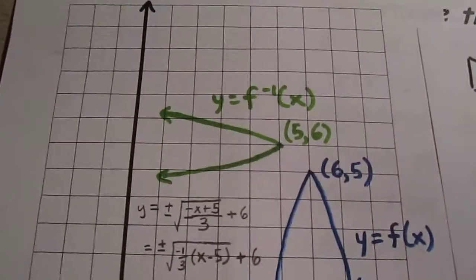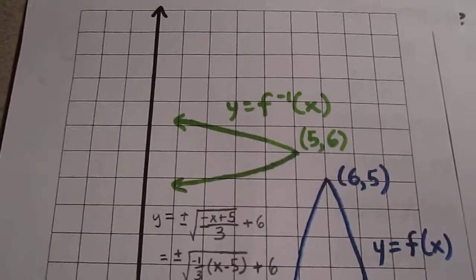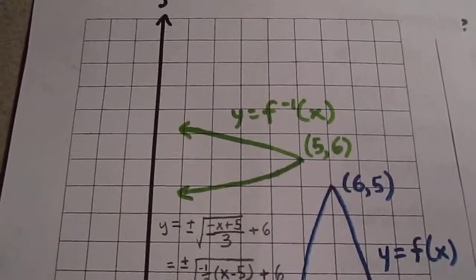Then on the green curve, we see that the range is the set of all y elements of the reals, and the domain is the set of all x less than or equal to 5.